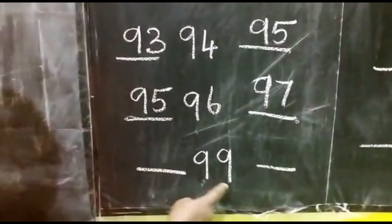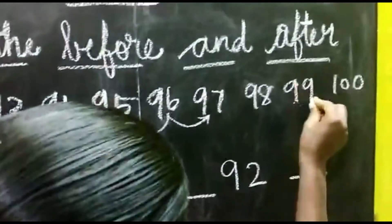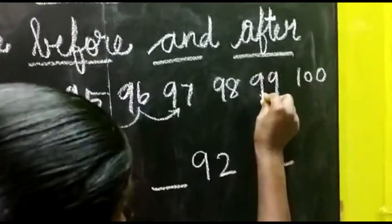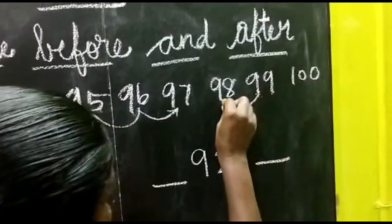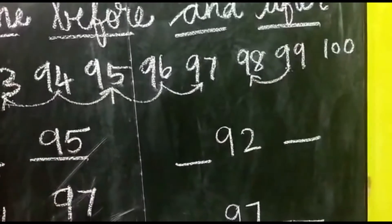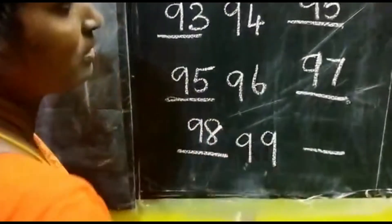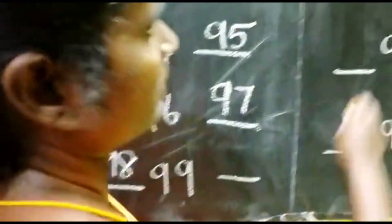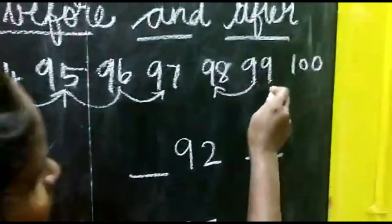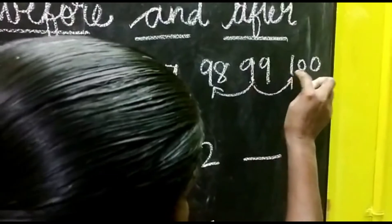The next number is 99. Before number of 99 is 98. Now 99 after number is 100: 1, 0, 0.